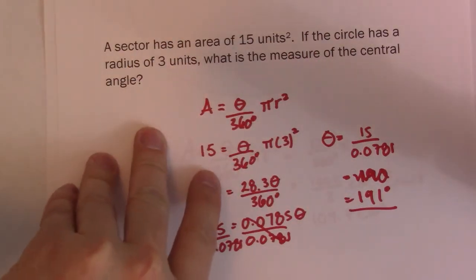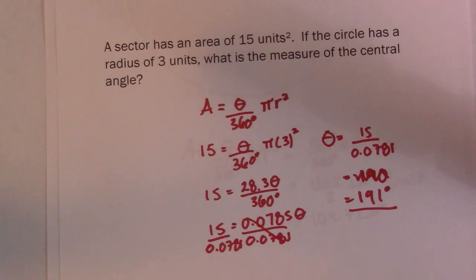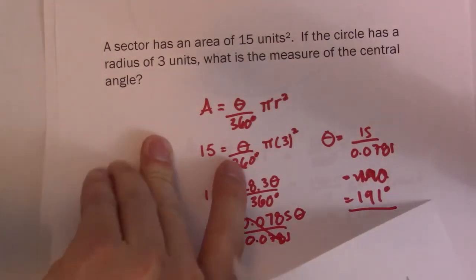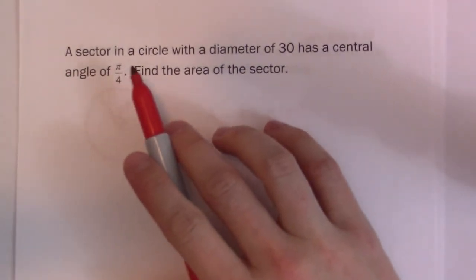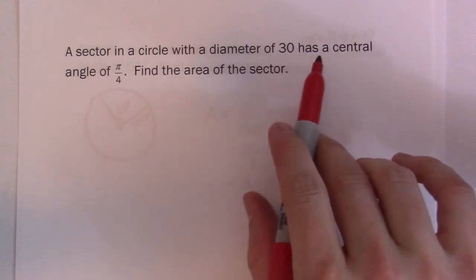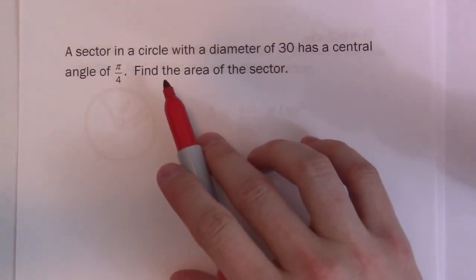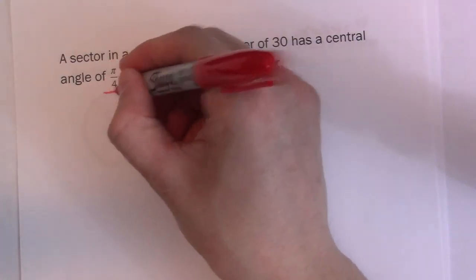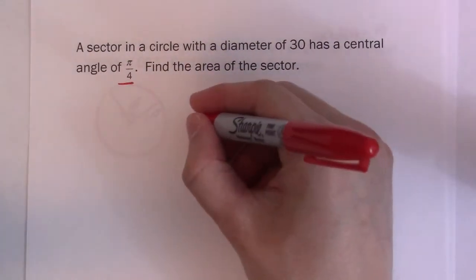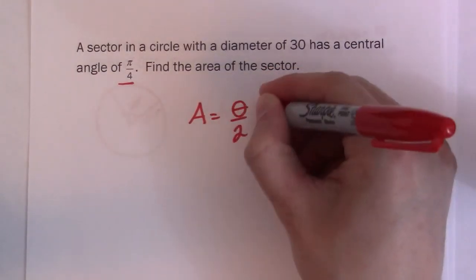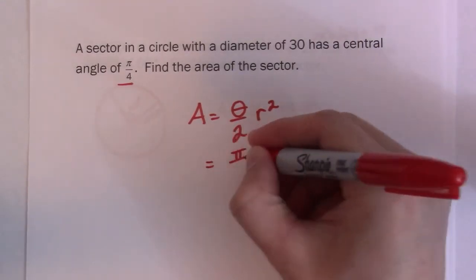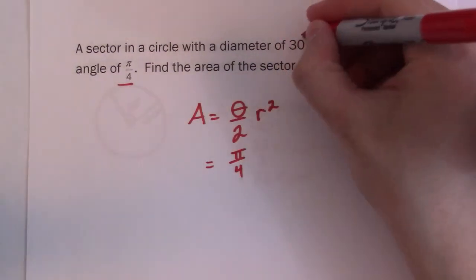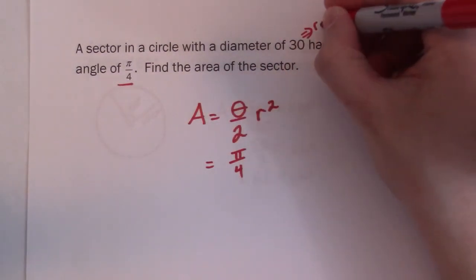Let's try one more or two more of these and see how it works out now. Here we go. It says the area, a sector in a circle with a diameter of 30 has a central angle of pi over 4. Find the area of the sector. I have a central angle this time in radians. What I have to do is I have to think about this formula: area is equal to theta over 2 r squared. I can go ahead now and shove that pi over 4. The only thing is I have a diameter, so I need to divide that by 2. So my radius is 15.